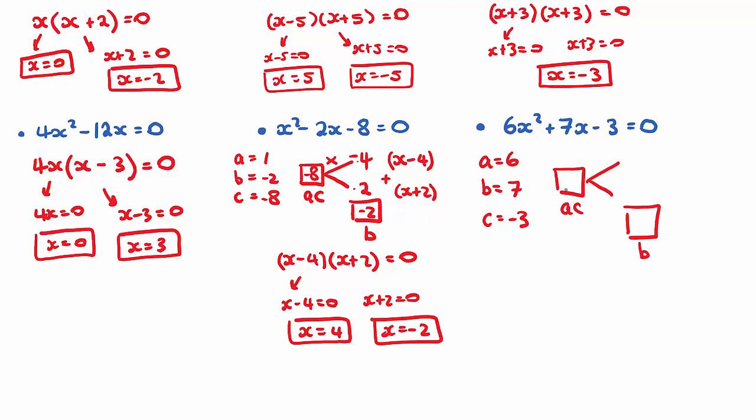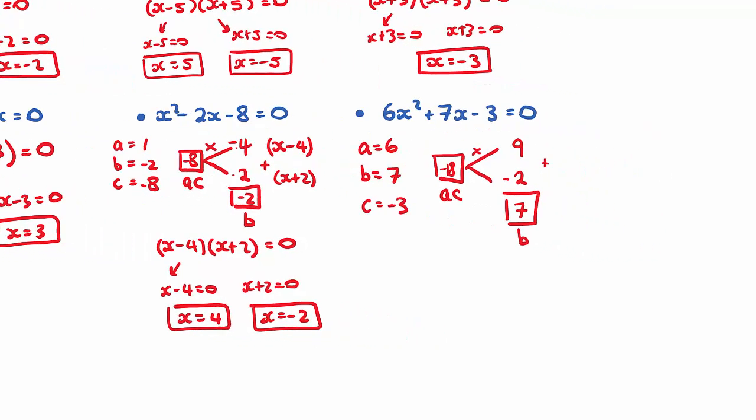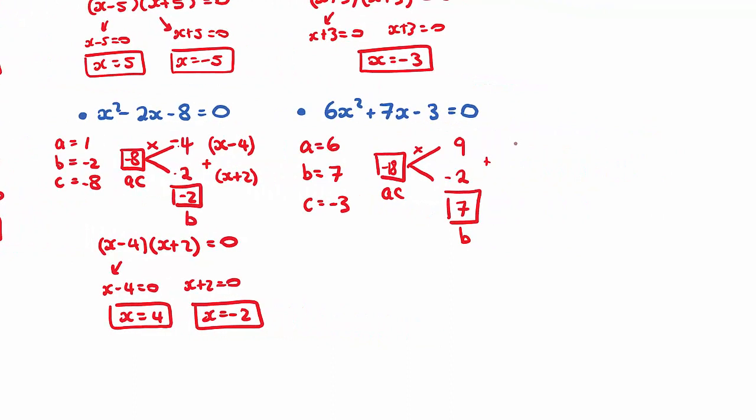Now, six times negative three is negative 18, positive seven for b. Now, two numbers that multiply to give negative 18, well, nine and two give 18. Which one will be the negative? Well, if you want to add to give positive seven, the two will need to be negative such that it still is a positive result. Now, here's the tricky bit. What we need to do is we need to put this six here into both brackets. So, instead of just putting x and our term, we need to put six x, and then we have plus nine, and six x minus two.